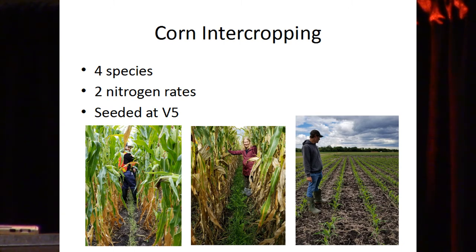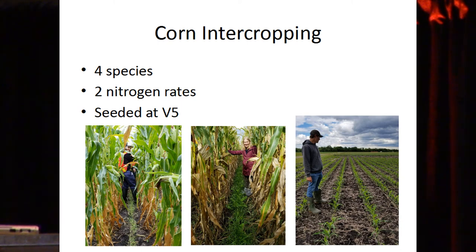Here's my technician Cody standing in the experiment when the corn was at the V4 stage. We planted the understory between V5 and V6, after two passes of herbicide in this Roundup Ready corn. These pictures are from early September when the corn canopy is dying back. This is at Kelburn Farm where we had a lot more corn because it was on clay soil and the corn had more water to draw on throughout the season. And here's me later in September at Carmen where the corn suffered more from drought stress and the canopy died back faster.